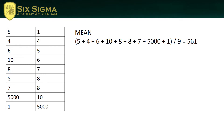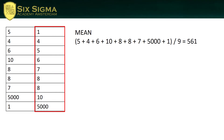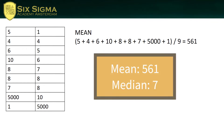Now let's calculate the median. In order to do that, we have to order the data from low to high, and then the middle value is the median. In this case the middle value is seven, so that would be the median. Now let's compare the median and the mean — both measures of central tendency — there's a big difference between them.